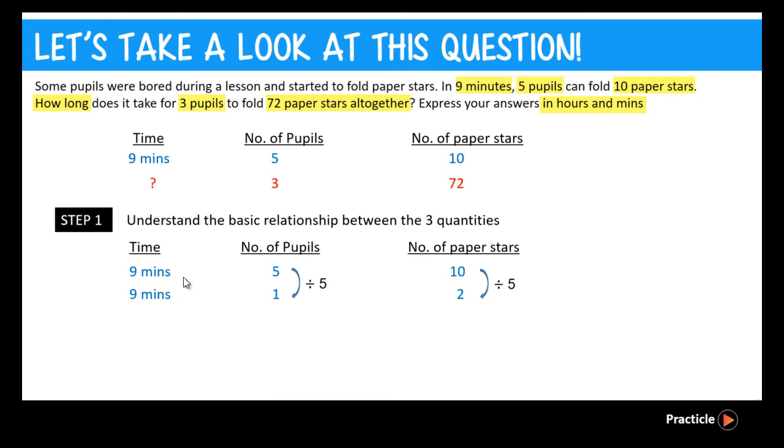So now that we know that, we need to look at what the question is asking us to find again. Here, remember we are supposed to find the amount of time that 3 pupils take to fold 72 stars. So now, using the same 9 minutes, let's try to find out how many stars can 3 pupils make.